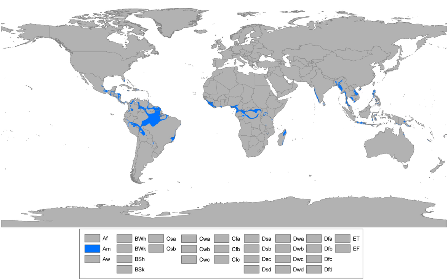Tropical monsoon climates have monthly mean temperatures above 18 degrees Celsius (64.4 degrees Fahrenheit) in every month of the year and feature wet and dry seasons, as tropical savanna climates do.